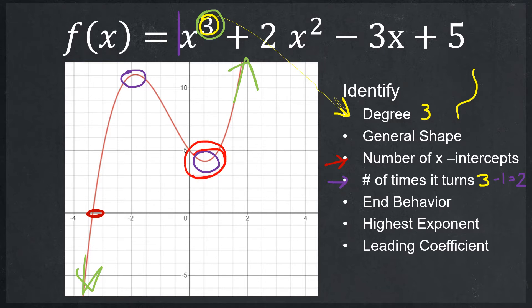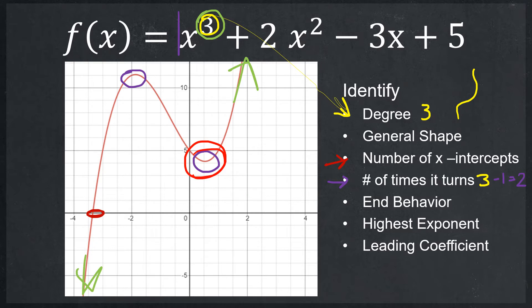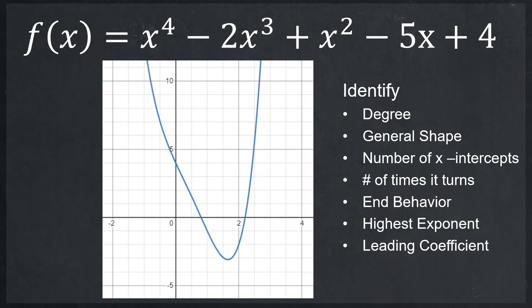If the curve had swooped down further, I would have had two more visible solutions. But because it changes direction above the x-axis, it creates imaginary solutions. The next function has a degree of four — an even degree — so the general shape tends to be a W-shape. I only see two x-intercepts, which means I'm going to have two imaginary solutions.